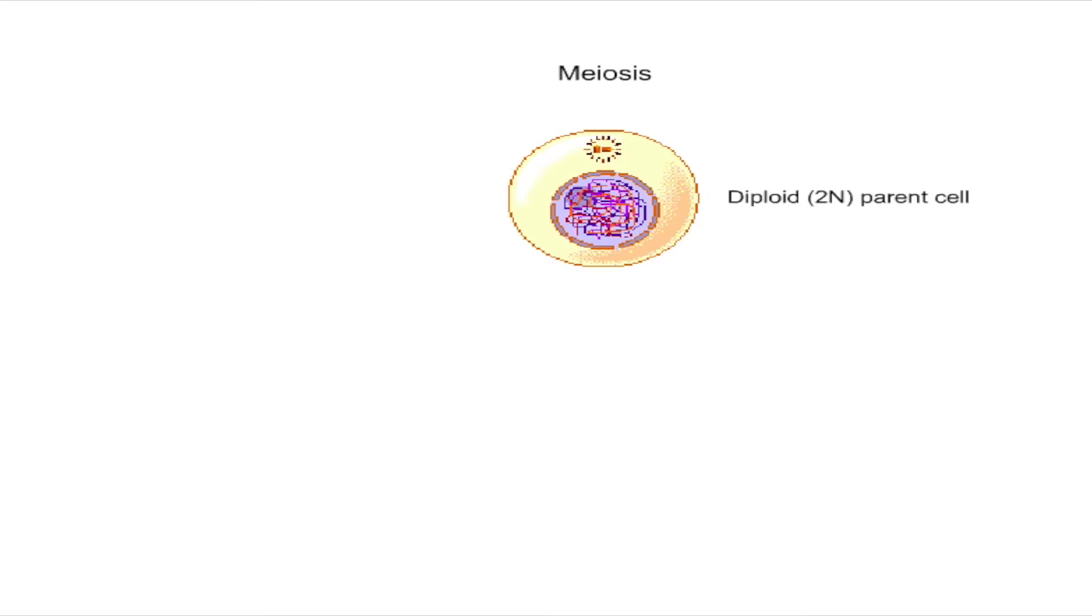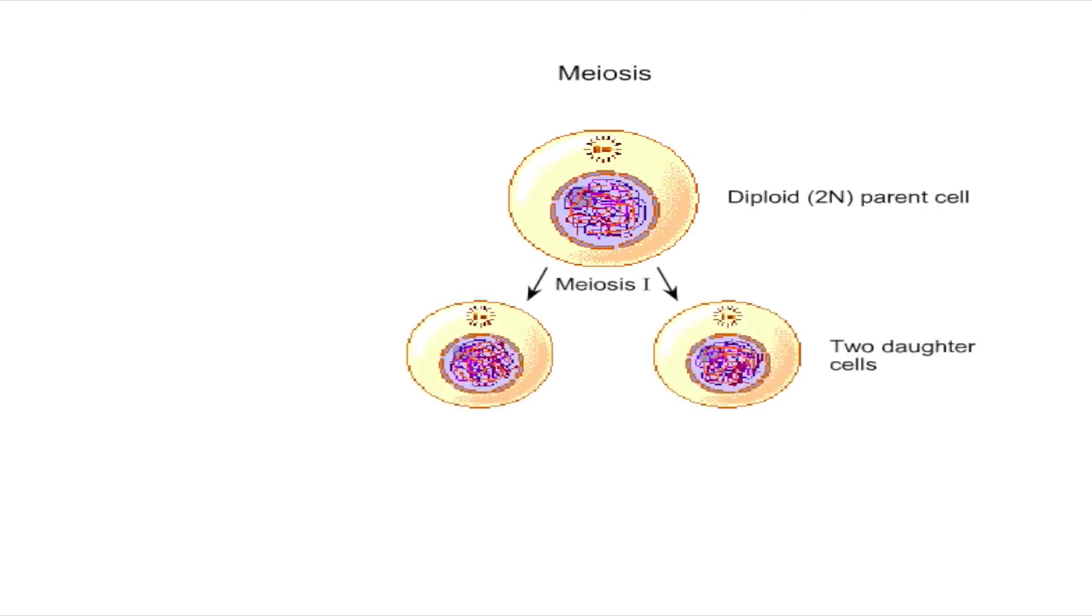Meiosis occurs in specialized diploid cells that give rise to haploid gametes. During meiosis, two successive rounds of cell division occur following only one round of DNA replication. During meiosis one, the first round of cell division, the number of chromosomes reduces from diploid to haploid.